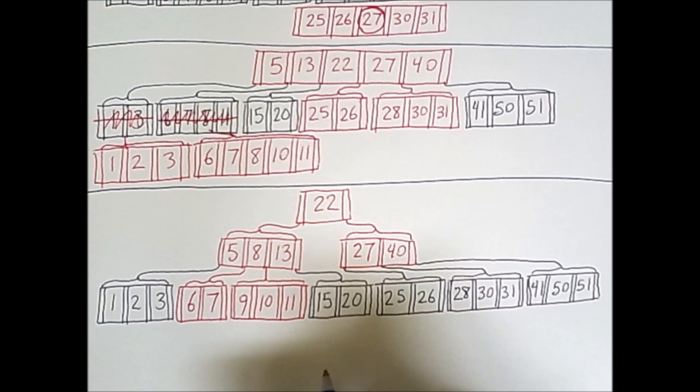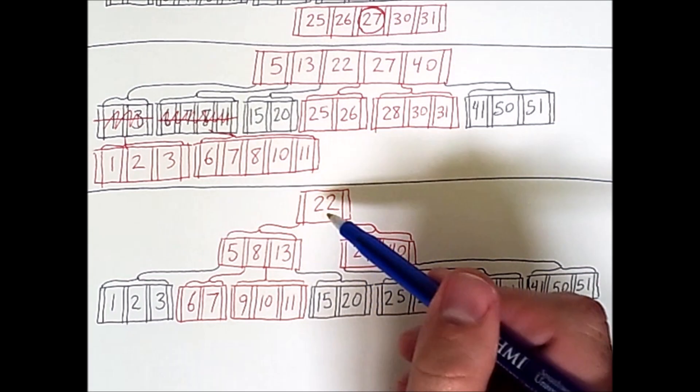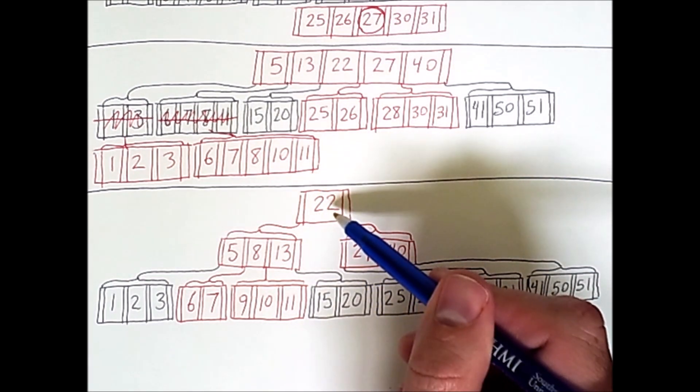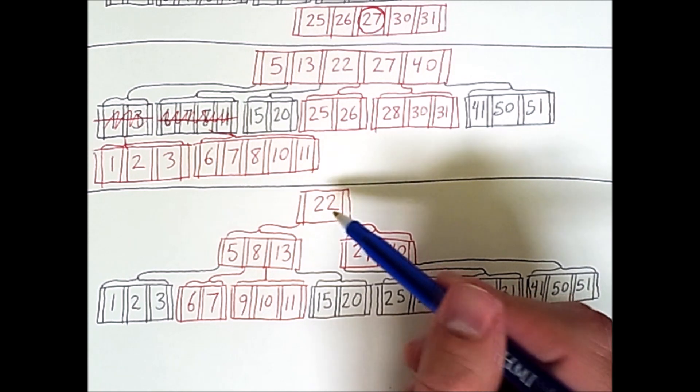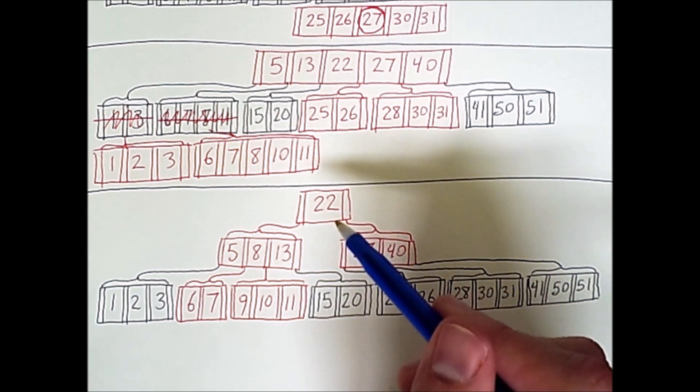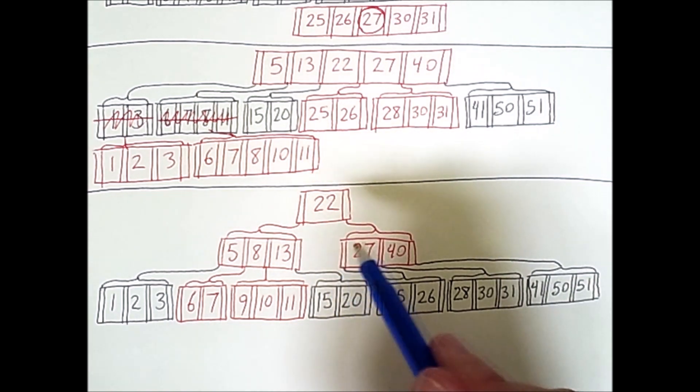The only thing unusual about this B-tree is that the root node does not have a min degree of 3. Now I did say earlier that the root node is the only node that doesn't have to obey that restriction. And it is for precisely this reason.